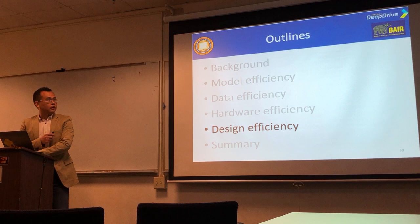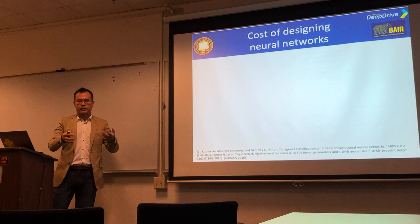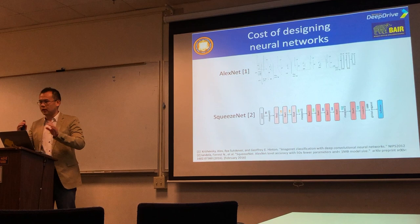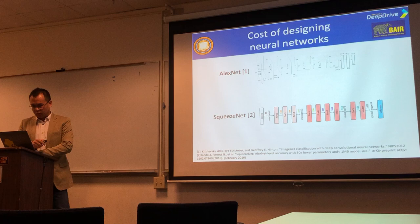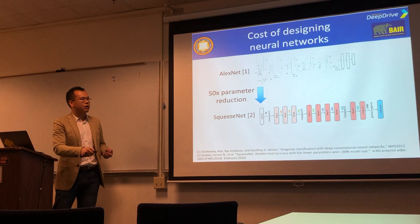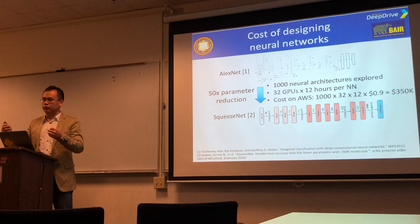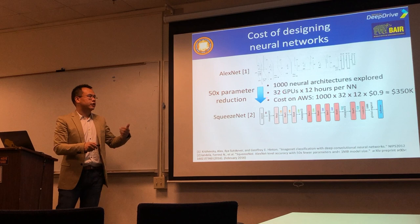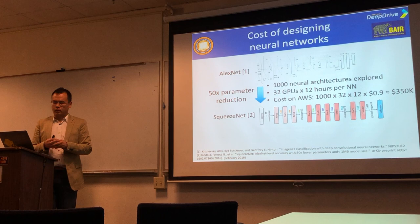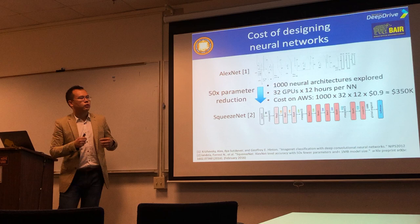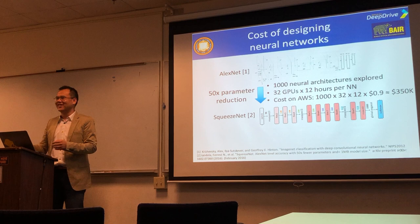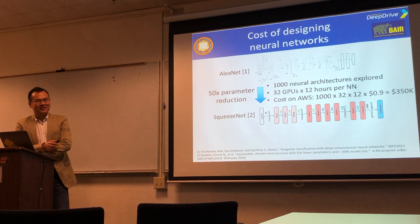Finally, let's talk about design efficiency. Let's use SqueezeNet as an example to understand the cost of designing a neural network. SqueezeNet achieved 50x parameter reduction versus AlexNet. But how did Forrest arrive at that design? Behind it, he trained 1,000 neural architectures, each taking 32 GPUs for 12 hours. He ran this on a National Lab data center, but if run on AWS, the cost would be $350,000 — probably more than the salary I've received at Berkeley in six years.